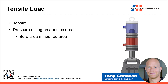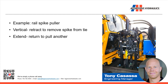That's compressive load. Now, tensile load — under load on retract, or pulling. If we take our simple example and flip it around, the rod is now facing down with a weight attached to it. When pressure acts on the annulus or donut-shaped area of the piston, it causes the cylinder to retract and pull that load up against gravity. A real-life example is a spike puller on rail maintenance equipment — the cylinder retracts and extracts the spike from the tie and plate. When the cylinder extends, it does very little work, just returning to pull another spike.